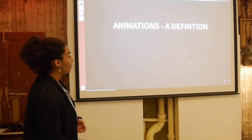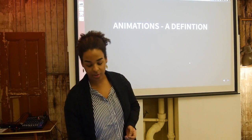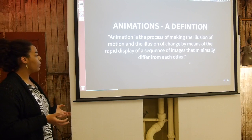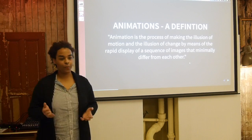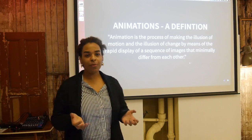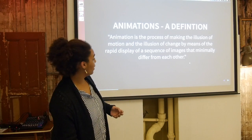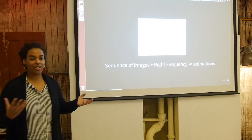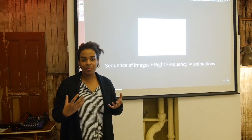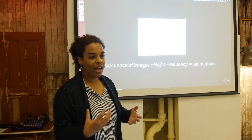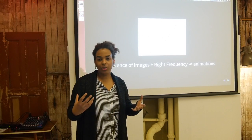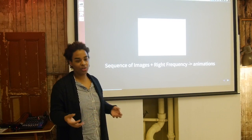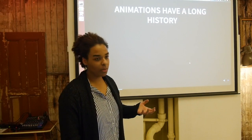Let's talk a little bit about the history. First of all, animations — what is this actually? Like a definition: it's the process of making the illusion of motion and the illusion of change by means of the rapid display of a sequence of images that minimally differ from each other. So this just means we have a sequence of images and once we show them with a specific frequency, we get out of these still images a real animation. This happens because we human beings cannot distinguish single images anymore — it gets modulated into something we perceive as motion.